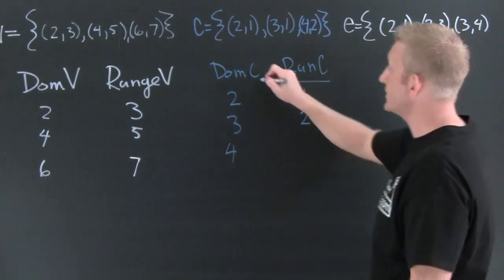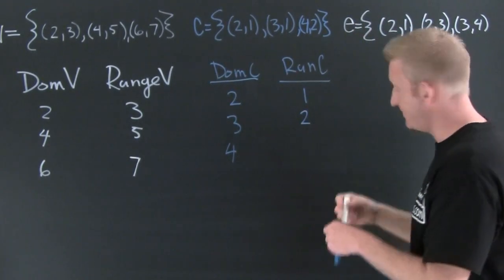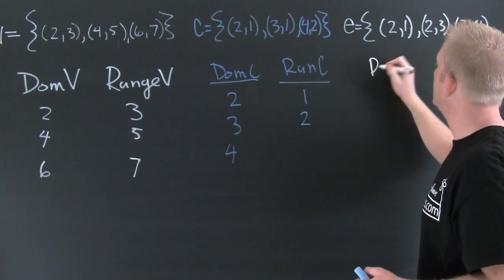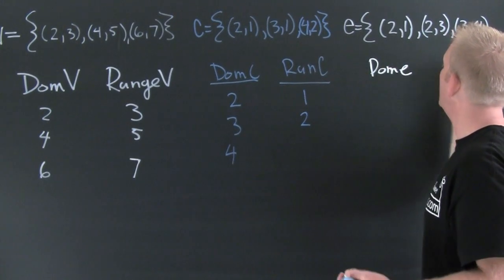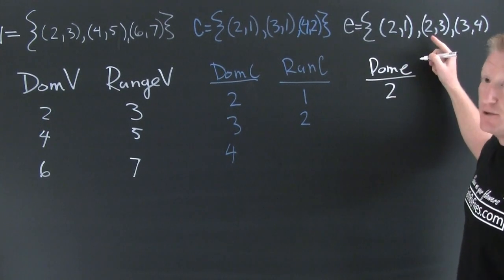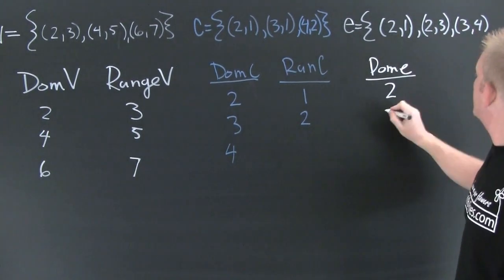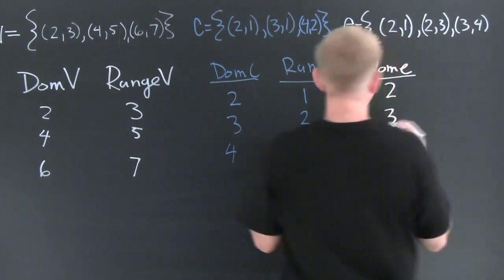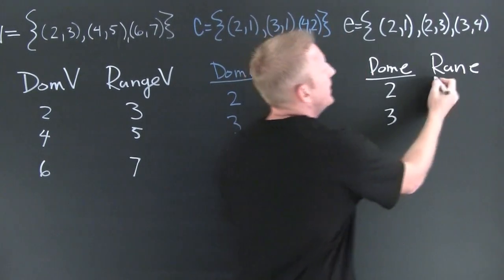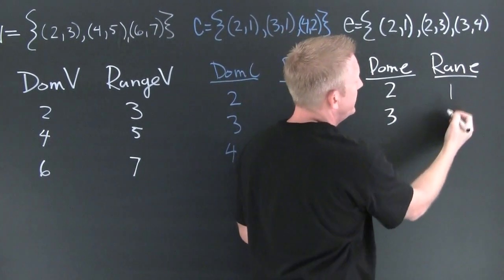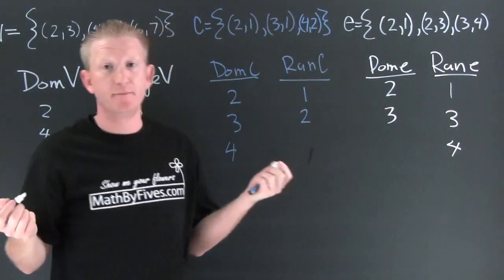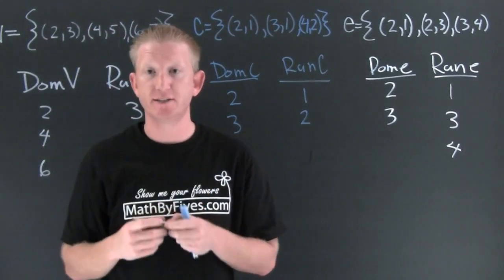Now let's look at the last relation, relation E. The domain is the set of all first elements — two appears as a repeated value but we don't repeat it — and three. The range is the set of all second elements: one, three, and four.